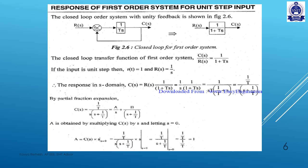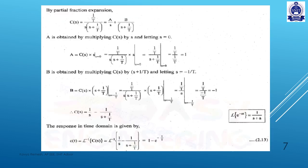The transfer function is 1 by (1 + Ts). We have a step input and a response. We already have a transfer function. We have a step input. Time t equal to 0, time t greater than 0. We have a magnitude of 1, so we have a small r of t. Let's check this in the s-domain. We have r(t) and R(s). So r(t) is 1 and R(s) is 1/s. This is our transfer function substitute. We have a partial fraction and mathematical method, giving us the response c(t) = 1 minus e raised to minus t by T.